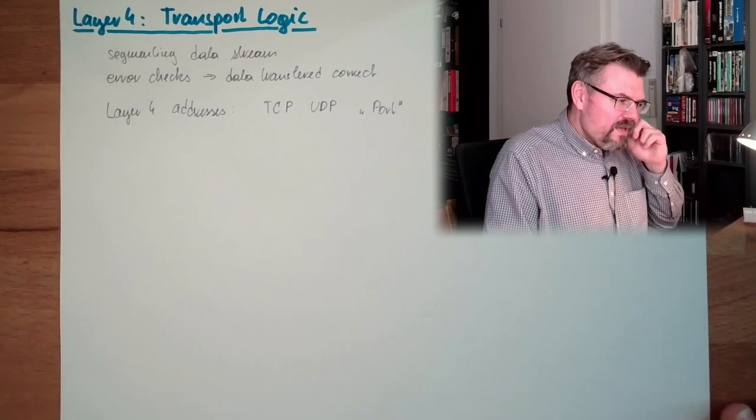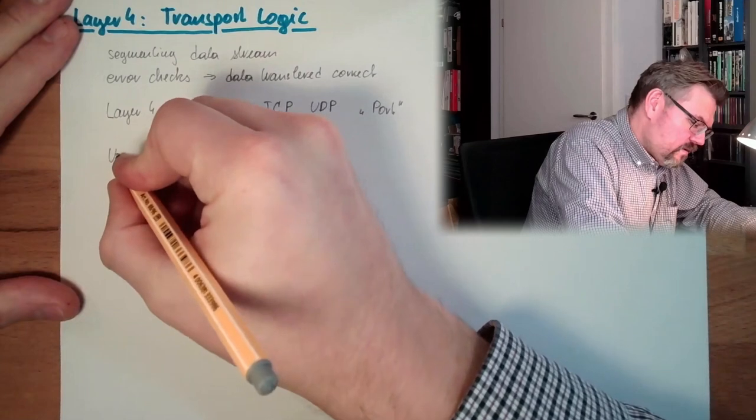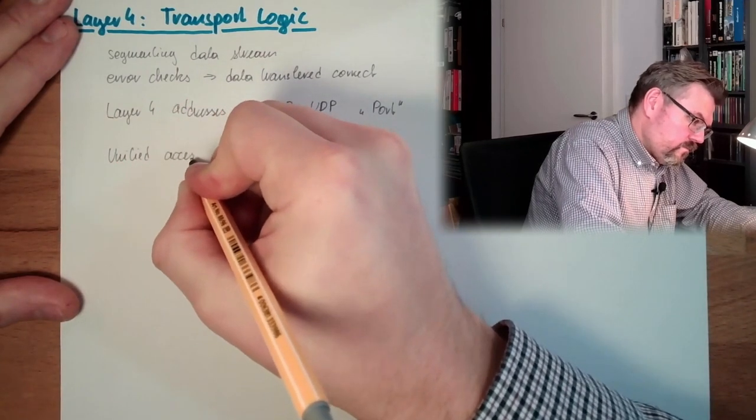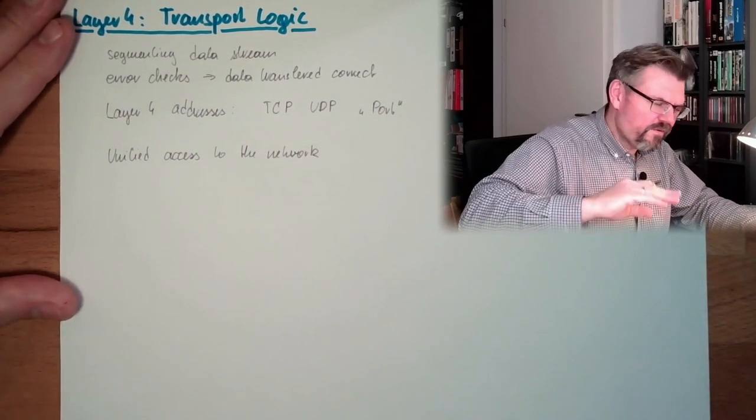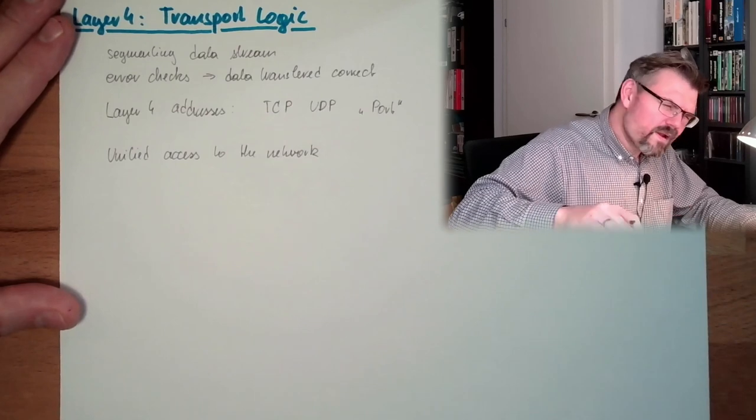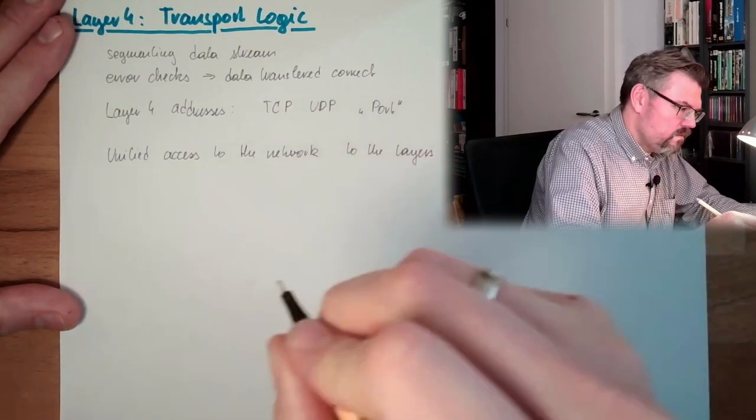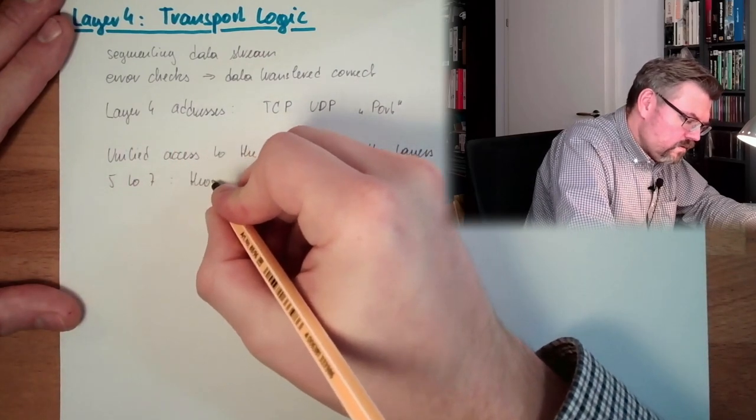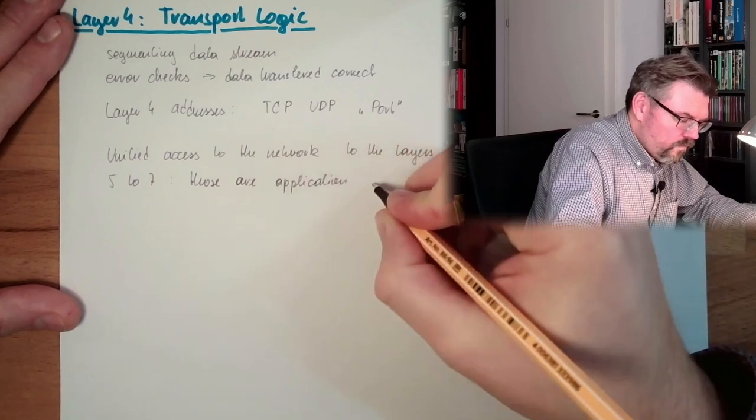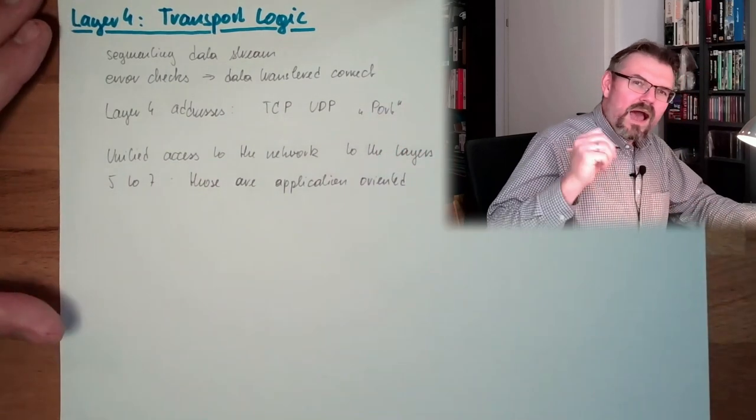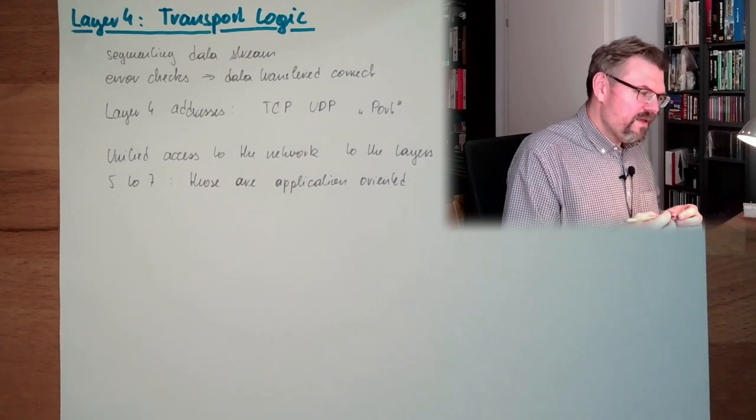So what the layer 4 is checking is that the transport is correct. And it will provide a unified access to the network to the layers 5 to 7, regardless how the data grams are transferred. Whatever. It's a unified access to the layers 5 to 7. And those are application-oriented. Up to now, it's just transferring data. Transport-oriented. And now, layer 5 to 7 are starting to be application-oriented.